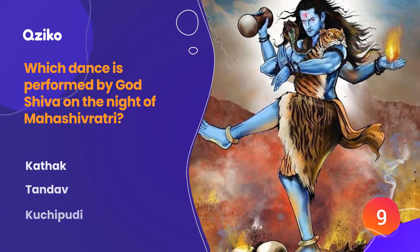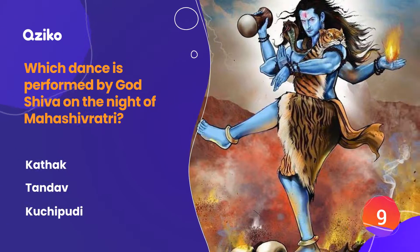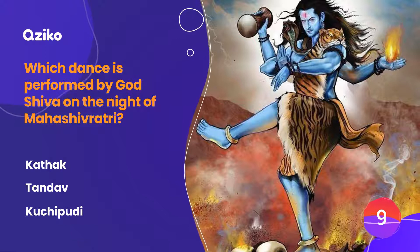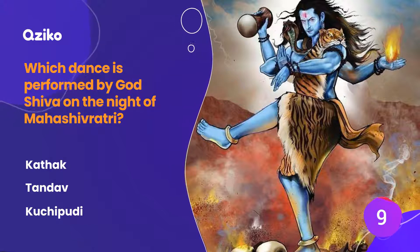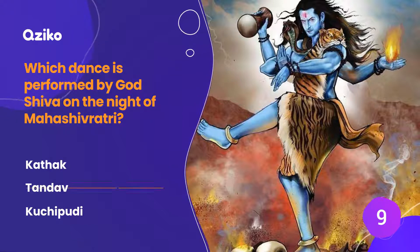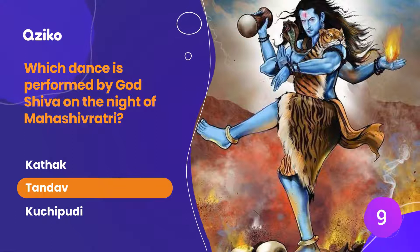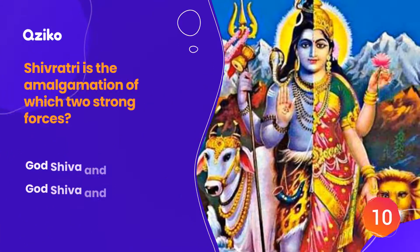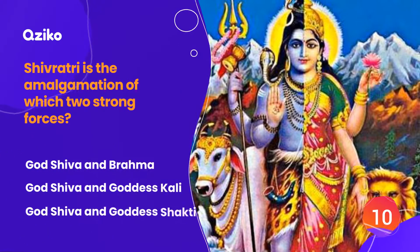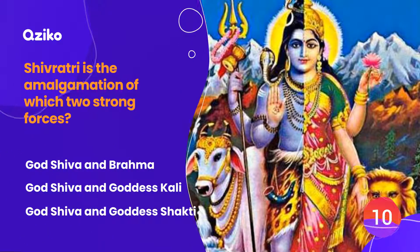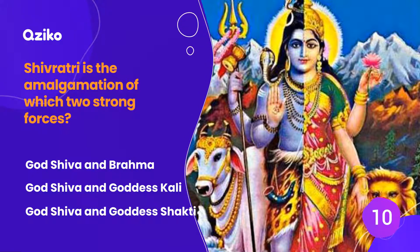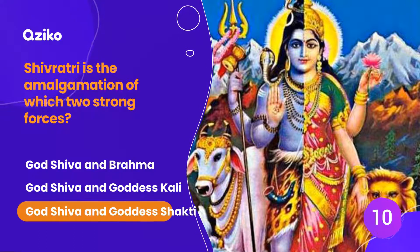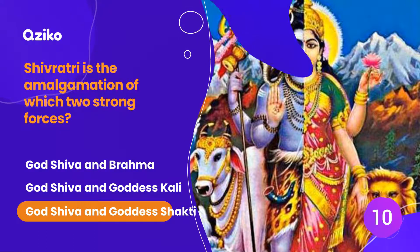Which dance is performed by God Shiva on the night of Mahashivratri? The right answer is Tandav. Mahashivratri is the amalgamation of which two strong forces? The right answer is God Shiva and Goddess Shakti.